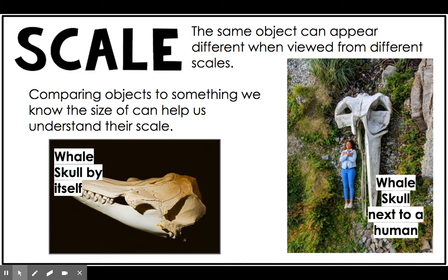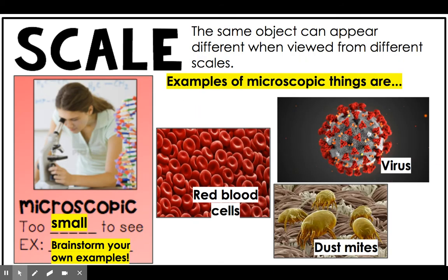There are three scales that we are going to be using to study science phenomena this year. The first is microscopic. Microscopic means that something is too small to be seen, and things on the microscopic scale could include a viral particle, a human cell like a red blood cell, or a dust mite. You could use any of these examples to fill in your graphic organizer, or you could brainstorm your own. As a rule, things that are microscopic are too small to be seen by the human eye.